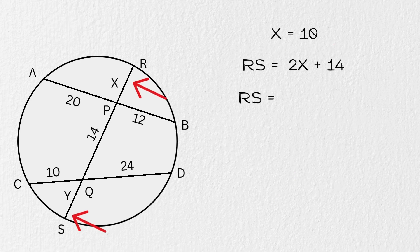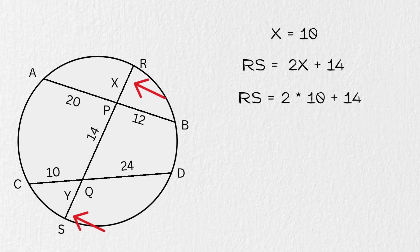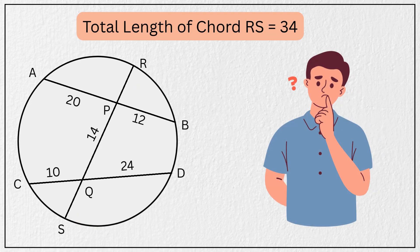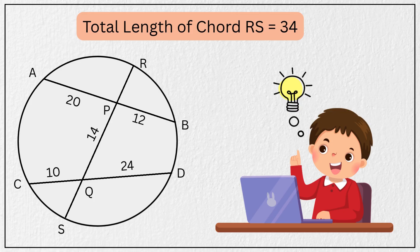So now substituting this value of X, the total length of RS is equal to 2 times 10 plus 14, which is 20 plus 14, and that is equal to 34 units. And that's our final answer. Pretty neat, right? A complex looking figure, but with the right theorem, it becomes surprisingly simple.